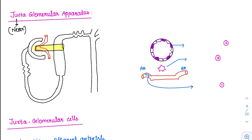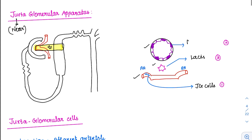In this area, what we have is the afferent arteriole, something called the lacis cells which are in between, and finally the macula densa. So the first important structure is JG cells — juxtaglomerular cells. The second is lacis cells, which is relatively less important. And the third is macula densa.